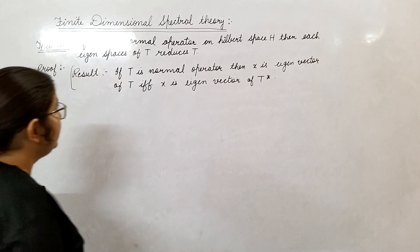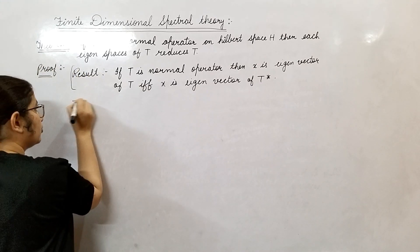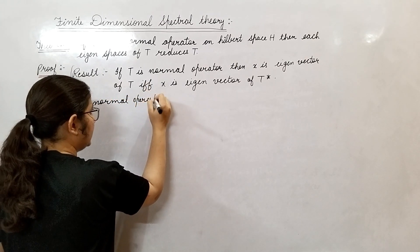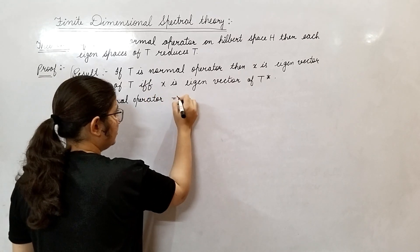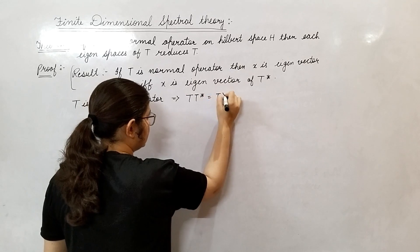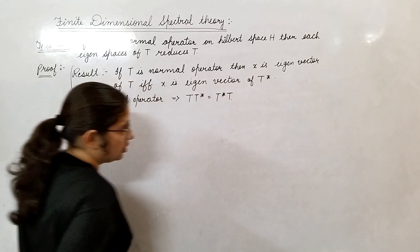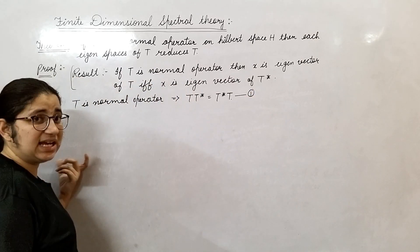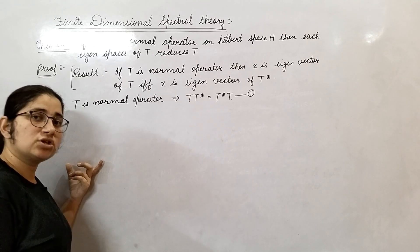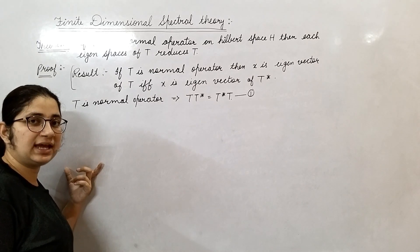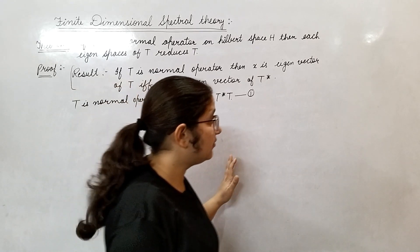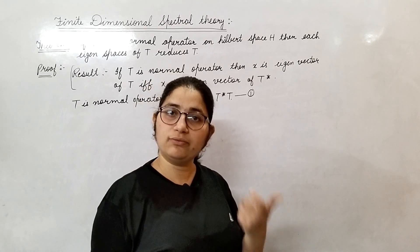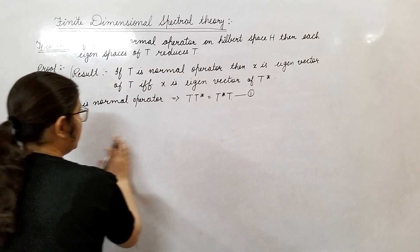Keep this result in mind. Now, we are given that T is a normal operator. If T is a normal operator, then we have TT* equals T*T. This is condition one. Now we need to show each eigenspace of T reduces T, so we take an arbitrary eigenspace and then generalize this result.